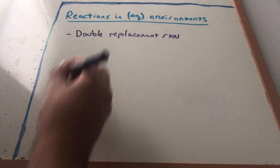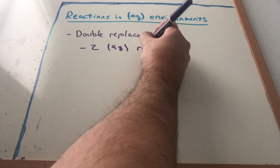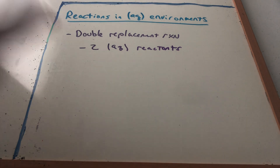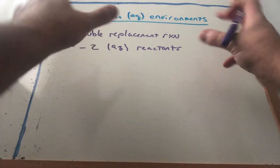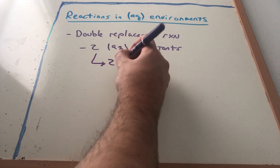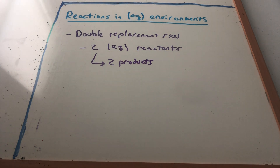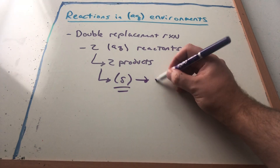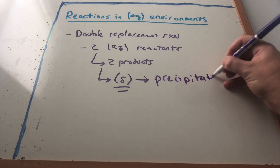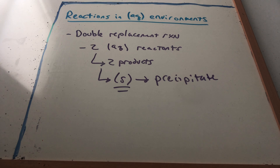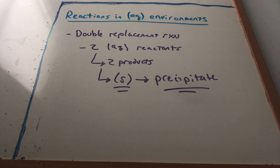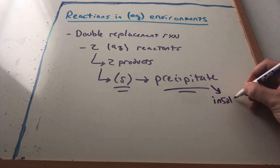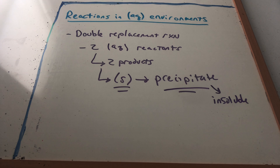For double replacement reactions, we have two aqueous reactants. We have a beaker with something soluble here and a beaker with something soluble here, and we dump them together to get two products. There's a special type of product that could result: if one of the products is a solid, we call that solid a precipitate, because it looks like we had two clear beakers and then we dumped them together and a solid manifested.